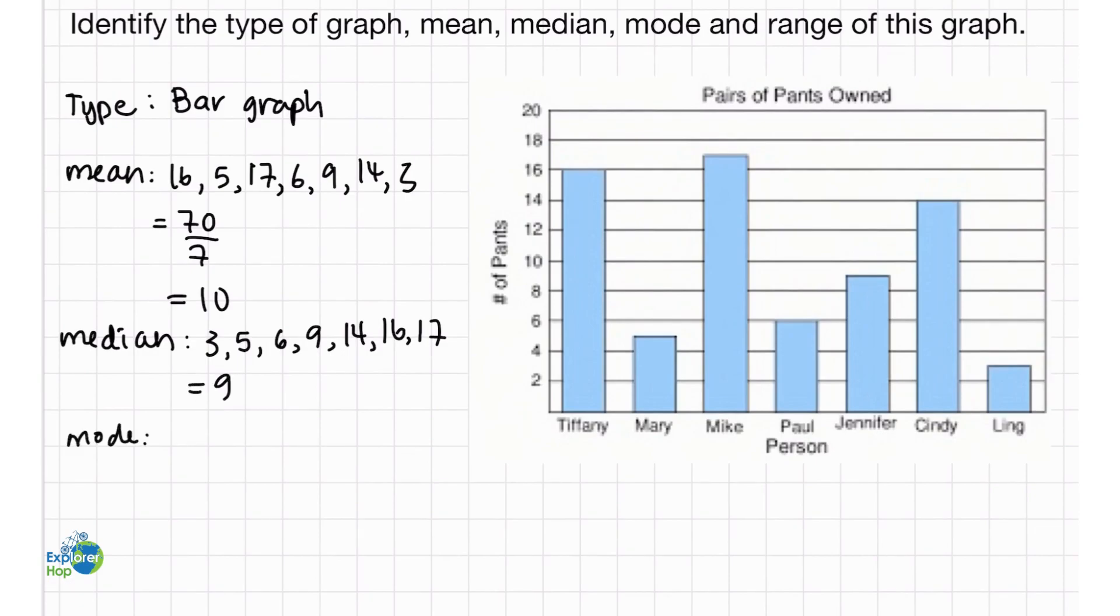And for the mode, it is just the number that appears the most in the set. And as we can see, there is no number like that. So, there is no mode.